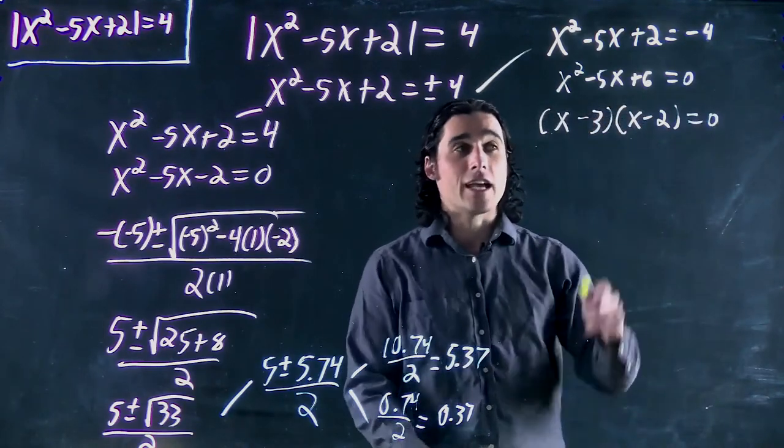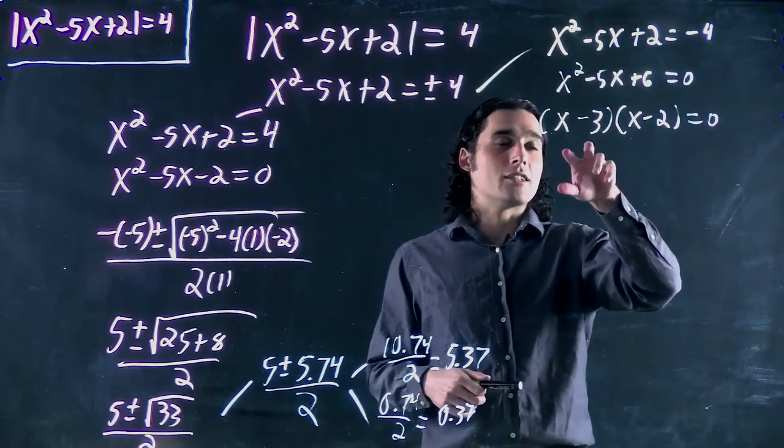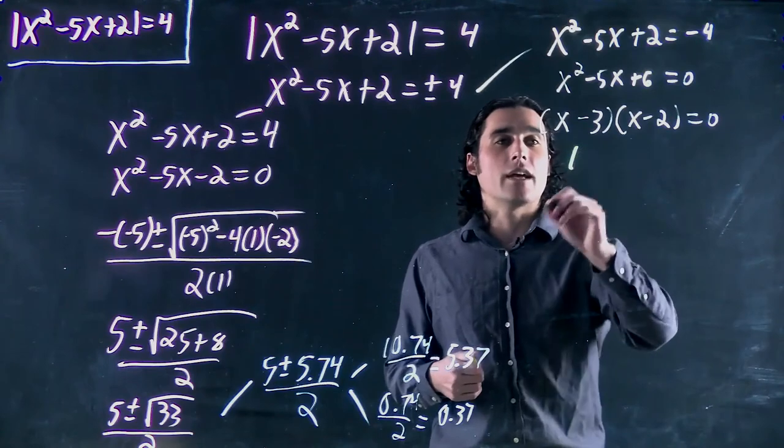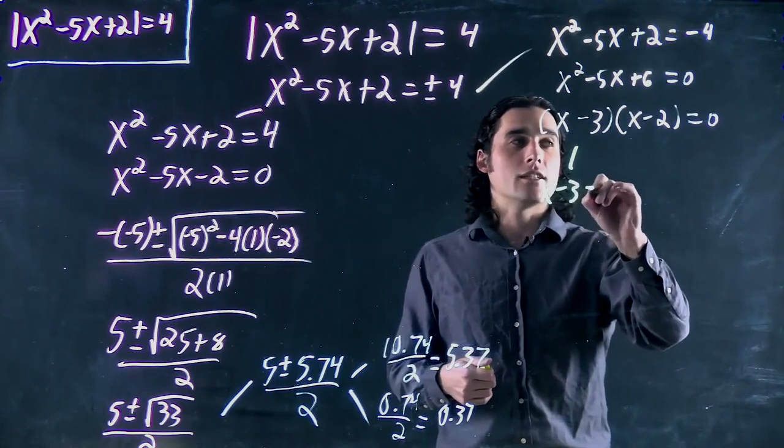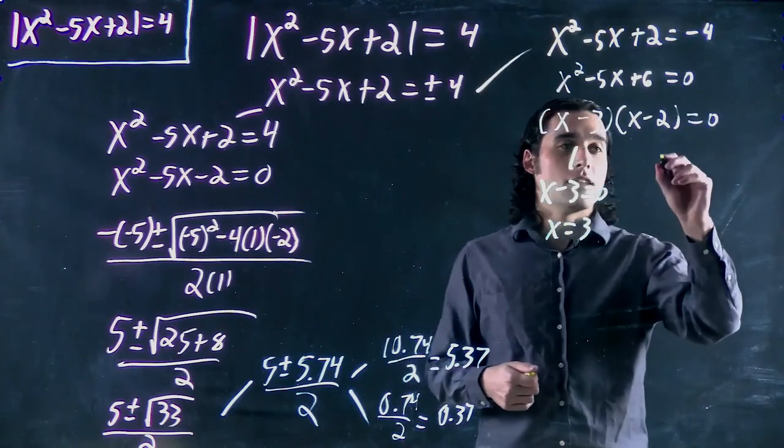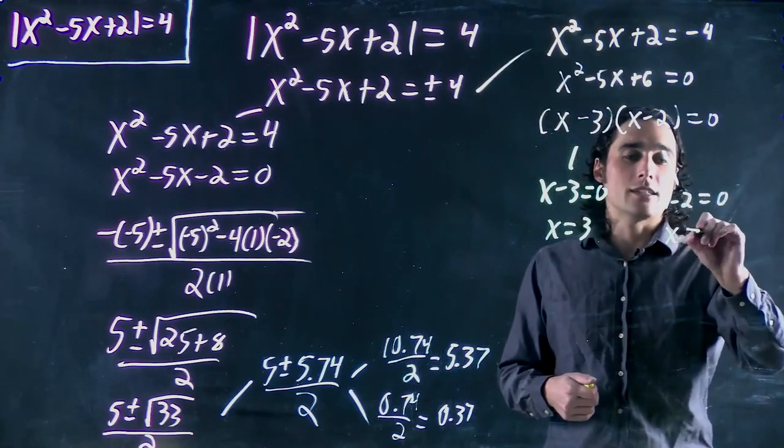And thus once again we have to evaluate both of these brackets. Remember, if either of these brackets are equal to 0, the entire thing must be 0, because 0 times anything is 0. So we get x minus 3 equals 0, or x equals 3. And then this one is going to lead to x minus 2 equals 0, or x equals 2.